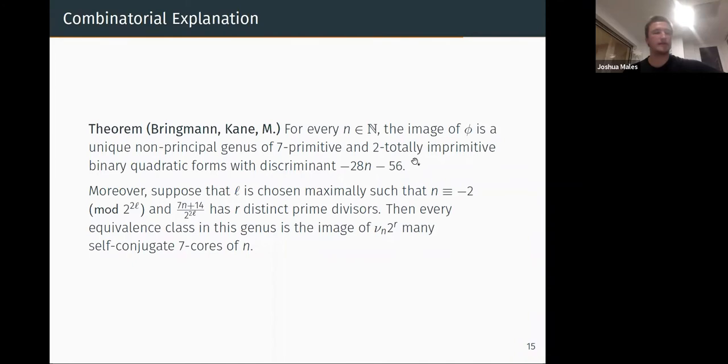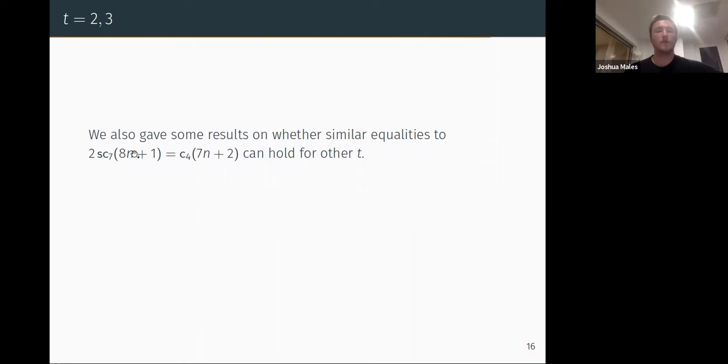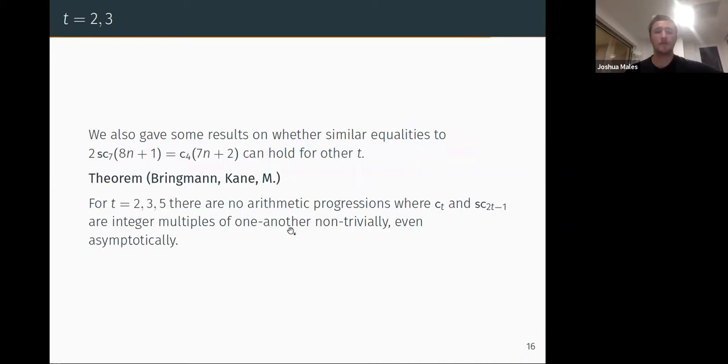So here I've been talking about SC7, SC4 and I guess I have 10-ish minutes left to go over some other things. We also gave some descriptions of whether identities like this curious equality can hold for other t. So here we only had 7 and 4 here. So what happens if we replace this 4 with a 2 or 3? For t equals 2, 3, and 5, there are no arithmetic progressions where CT and SC(2t-1) are integral integer multiples of one another. And here non-trivially just means that sometimes they're always zero. Even better, they can't hold even asymptotically. So even if I look at just their asymptotics, whether they settle down into something like this equation, this never happens.